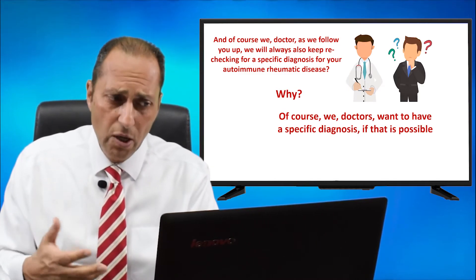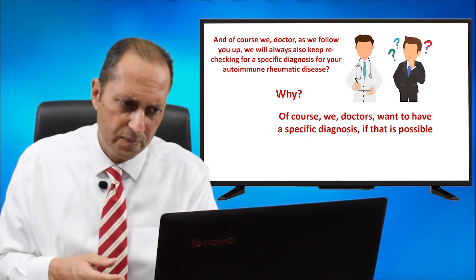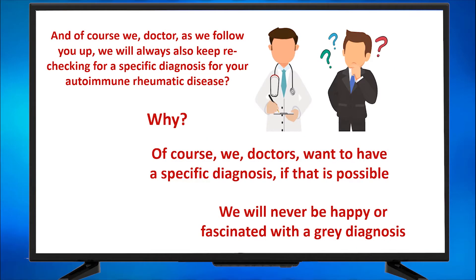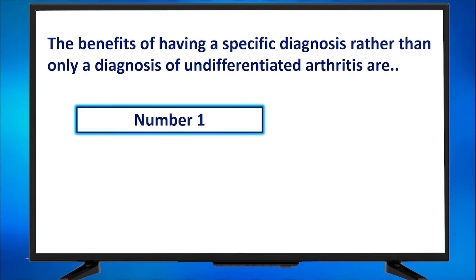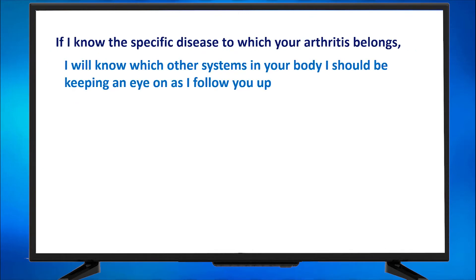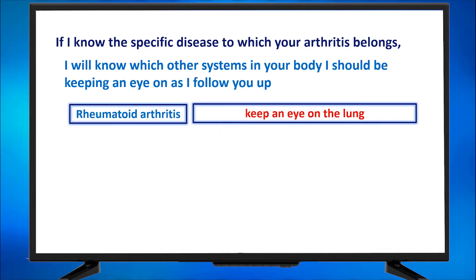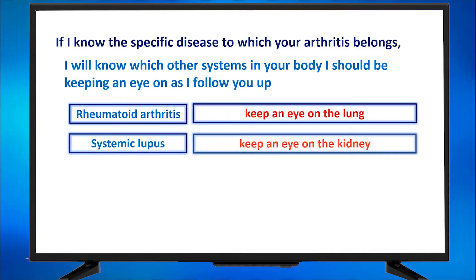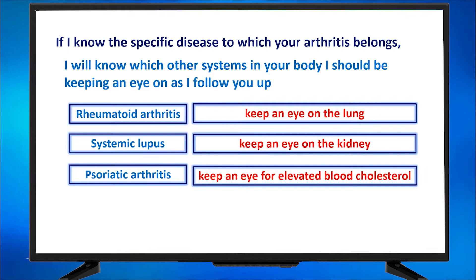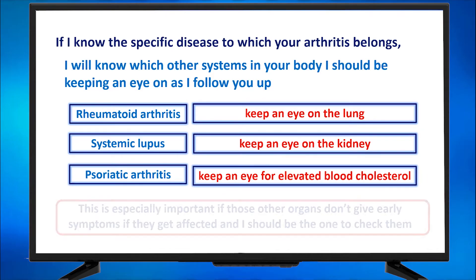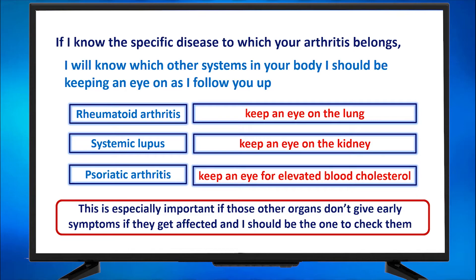We will never be happy or fascinated with a gray diagnosis. The benefits of having a specific diagnosis rather than only undifferentiated arthritis are as follows. Number one: if I know the specific disease to which your arthritis belongs, I will know which other systems in your body I should be keeping an eye on. If I know this is rheumatoid arthritis, I keep an eye on the lung. If it is lupus, I keep an eye on the kidney. If it is psoriatic arthritis, I keep an eye on elevated blood cholesterol. This is especially important if those other organs don't give early symptoms when affected and I should be the one to check them.